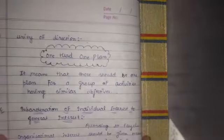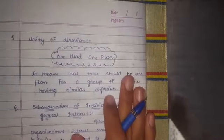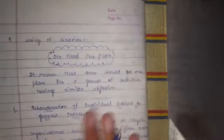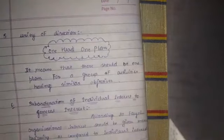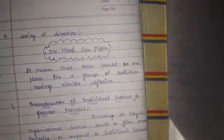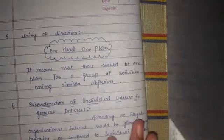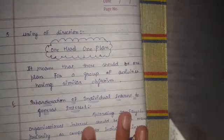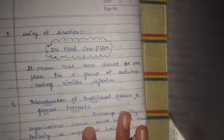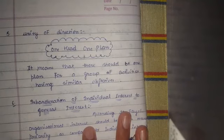The fifth principle is Unity of Direction. Unity of direction means one head, one plan. It means that one group of activities should be guided by one person and directed toward one common goal.